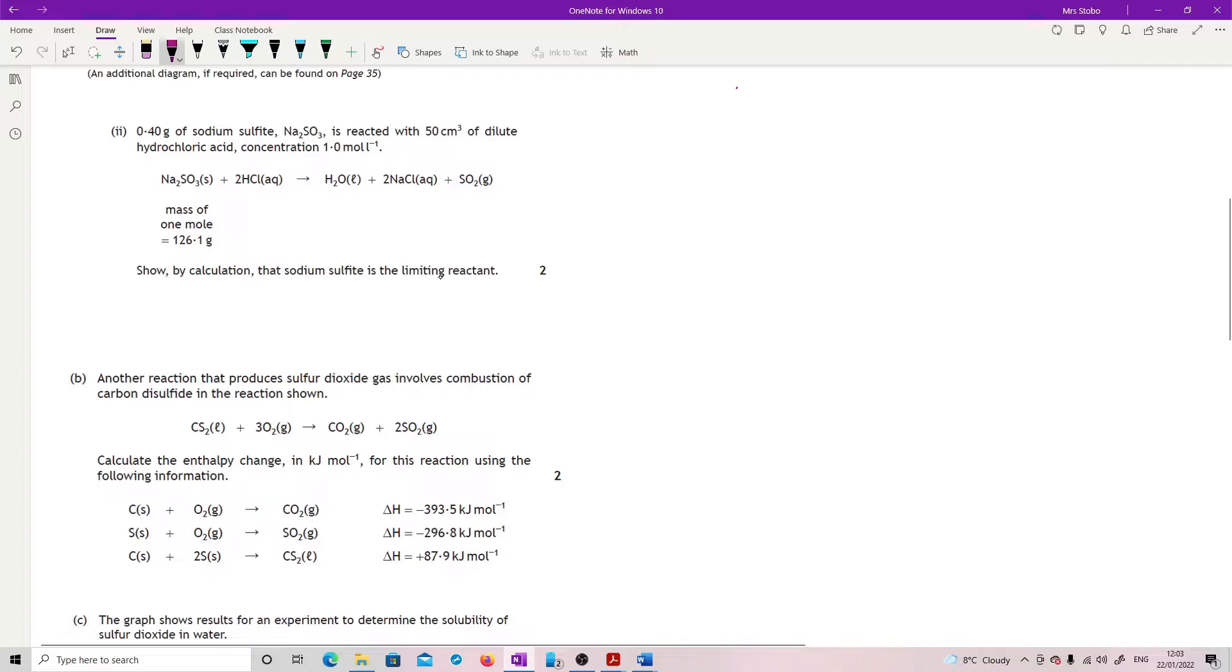0.4 grams of sodium sulfite is reacted with 50 centimeters cubed of dilute hydrochloric acid, concentration 1 molar. Show by calculation that sodium sulfite is the limiting reactant. So this is an excess calculation question. So first thing you've got to do is work out one of the moles, one of the things. So let's do the moles of sodium sulfite.